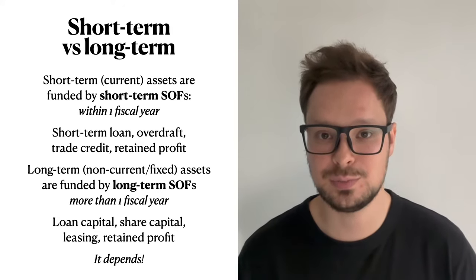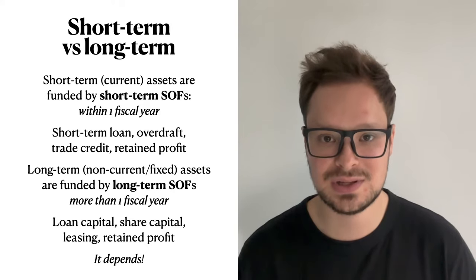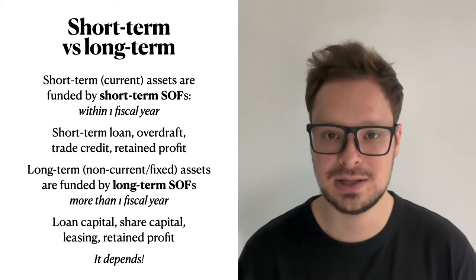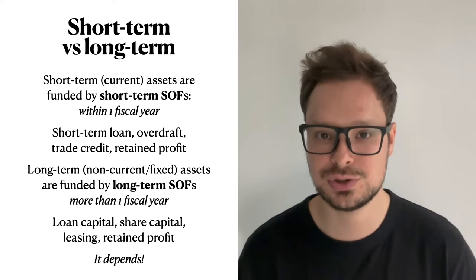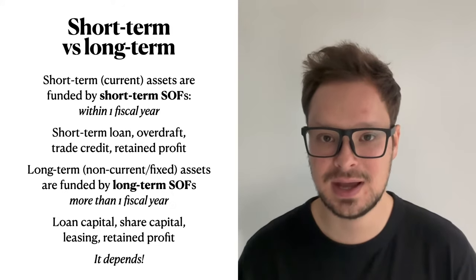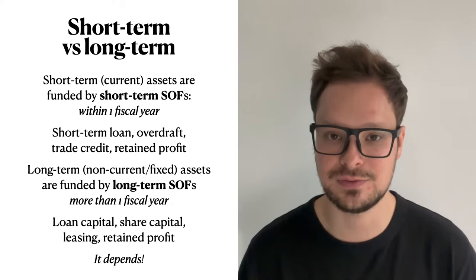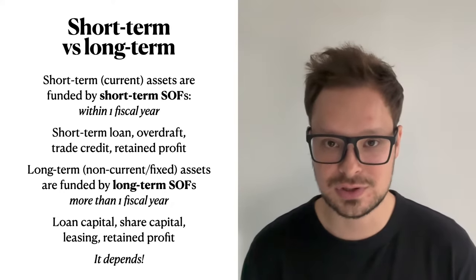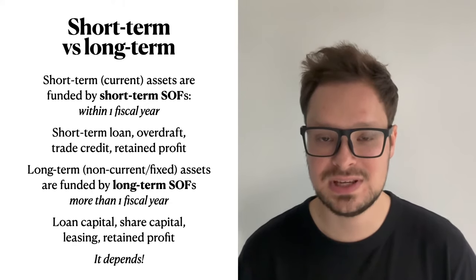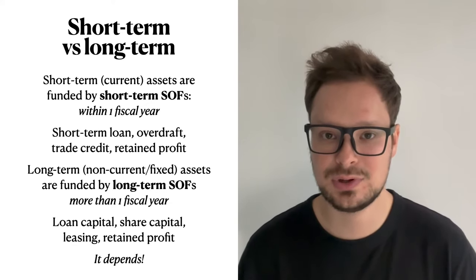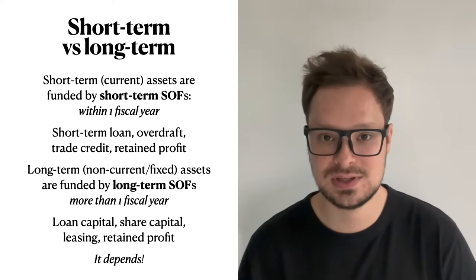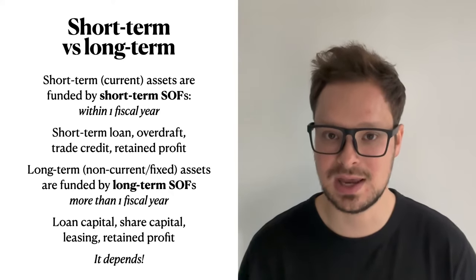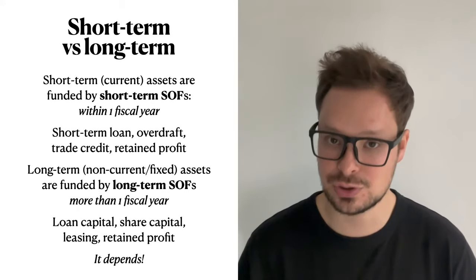If you'd like to purchase short-term or current assets — assets that last for less than a year — then you'll probably need short-term sources of finance. Common examples of short-term sources of finance are short-term loans, trade credit, overdraft, and retained profits. You can use all four of these and pay back within one year, which means they are short-term.